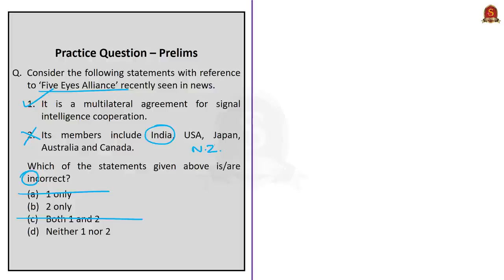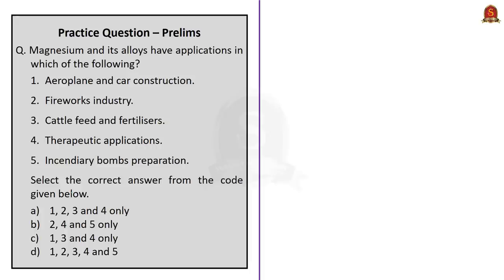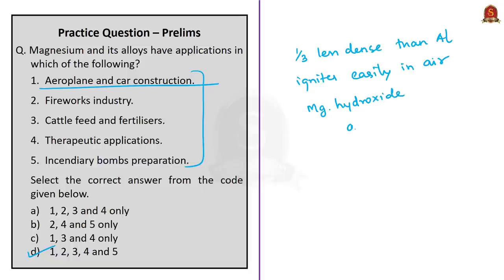This question is with reference to applications of magnesium and its alloys. The correct answer is option D - magnesium and its alloys have applications in all these things. Magnesium is one third less dense than aluminum. Magnesium aluminum alloys are light in mass. Magnesium improves mechanical fabrication and welding characteristics of aluminum when used as an alloying agent. Therefore, they are useful in airplane and car construction. Magnesium ignites easily in air and burns with a bright light, therefore used in flares, fireworks and sparklers. A suspension of magnesium hydroxide in water is called milk of magnesia used as antacid in medicine. It has other therapeutic uses as we discussed in the analysis.